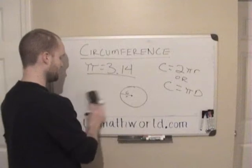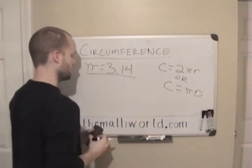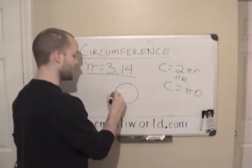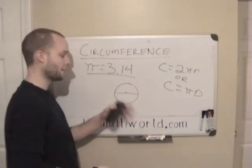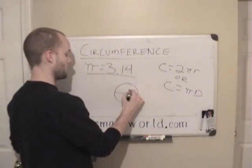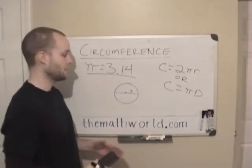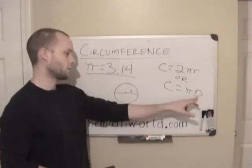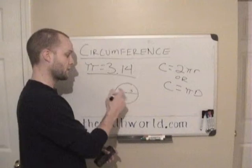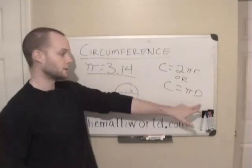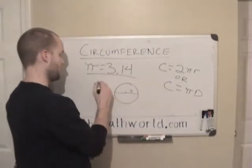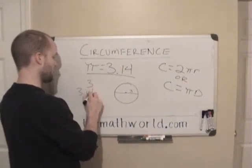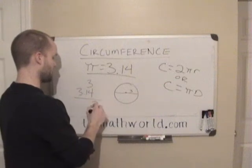Alright, we'll do another one. Let's say they give you a circle and the diameter, the entire width of the circle, is 3, and they ask what is the circumference. Well, all we have to do now is just 3 times π. Since 3 is the entire width, that's the diameter, so we can just do 3 times π, which is 3 times 3.14.